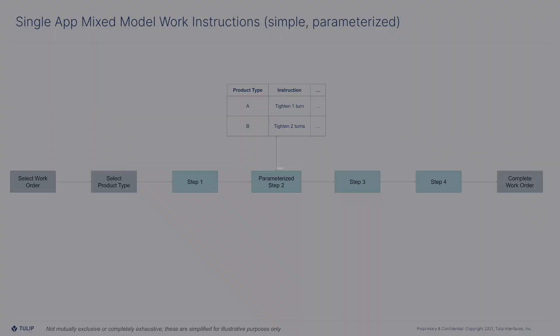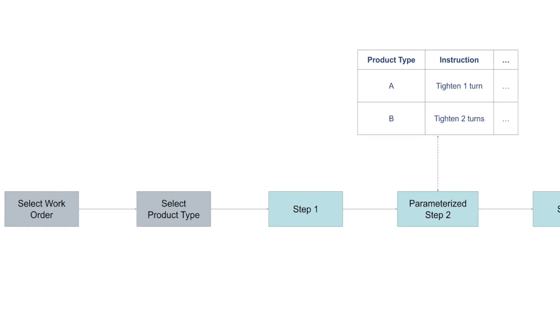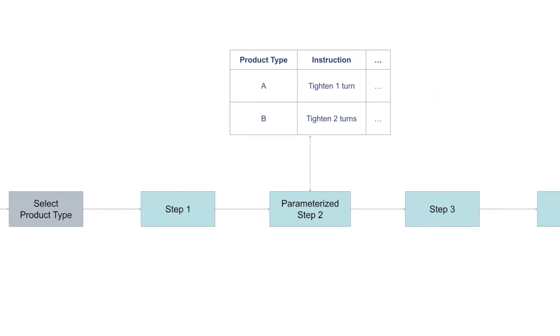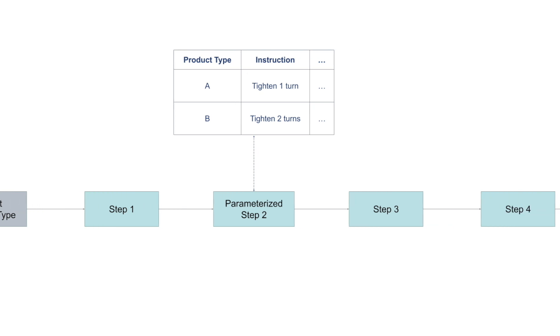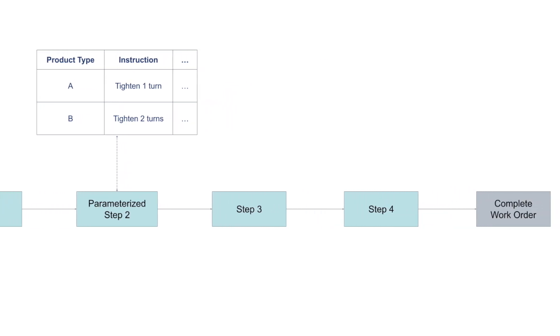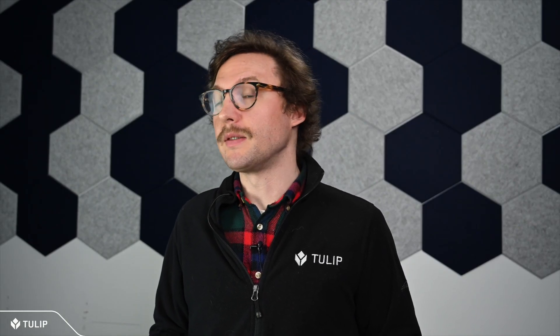At the other end of the spectrum, let's look at a different Acme plant. This facility produces dozens of products with a huge amount of variation, and operators can't rely on muscle memory to guide them through a process. For this plant, Acme chose to go with a table-based design that allows them to manage their products and variations at scale. Both solutions work, and the right one for you will depend on the needs of your operations.